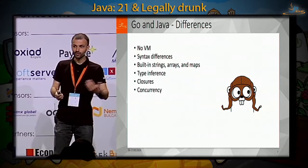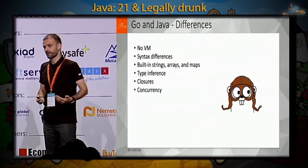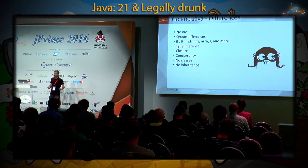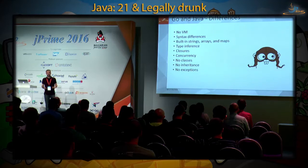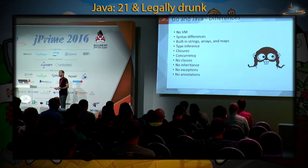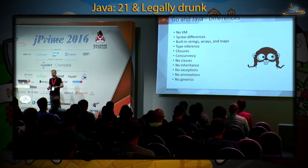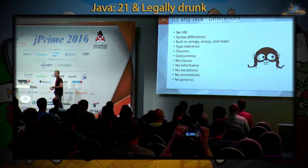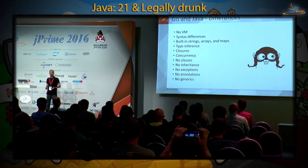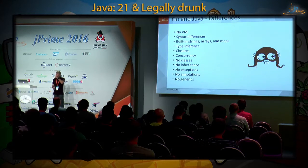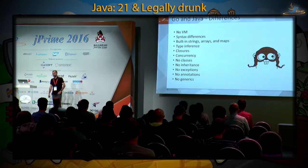Even more interesting are the things that Go doesn't have — and that's a pretty long list. Go has no classes. There is also no inheritance, consequently no exceptions, no annotations, and no generics. There are more not placed on the slides to fit — no overloaded methods, no final keyword or any concept of variable immutability, and so on.